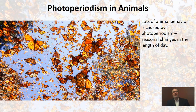Besides looking at a change of coat, there are lots of other types of animal behavior that are caused or controlled by photoperiodism. Photoperiodism is animals changing in response to season, which is all about the amount of daylight and night. One type that you may be familiar with is migration. Lots of herd animals will migrate based on seasonal changes — they just know when it's time. Same thing with birds. Here we can see a monarch butterfly migration. Migrations are another type of behavior caused by photoperiodism.